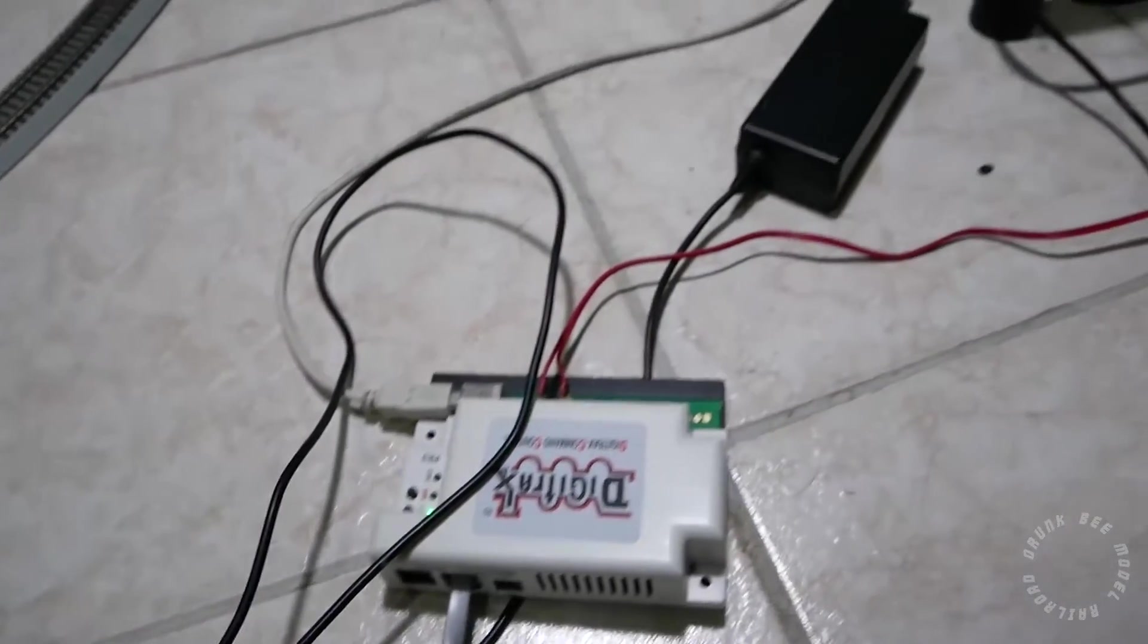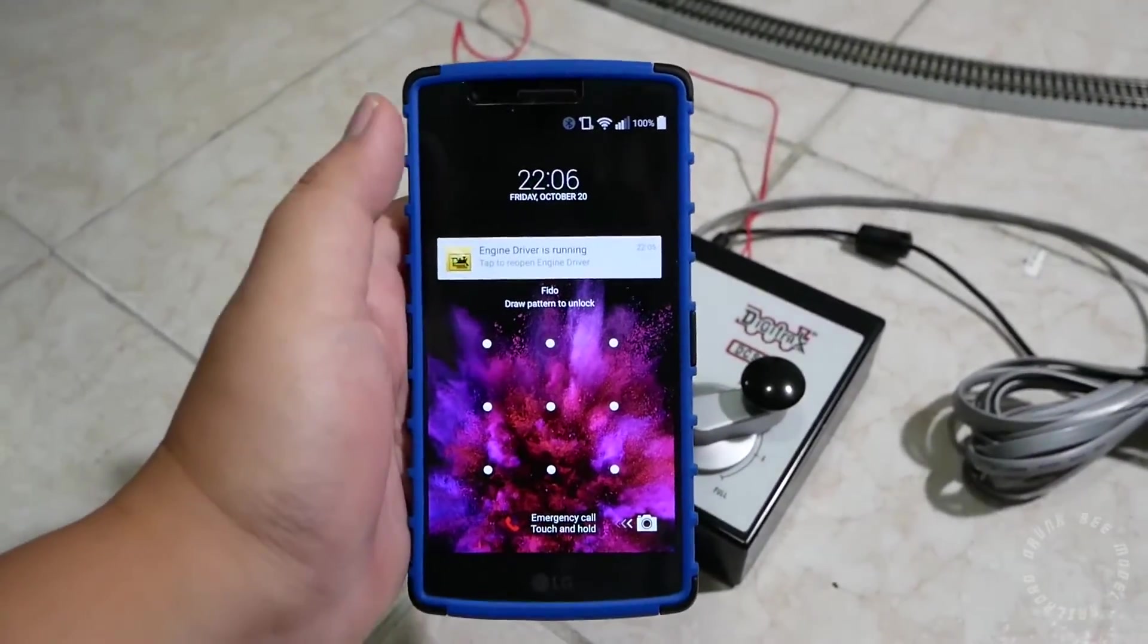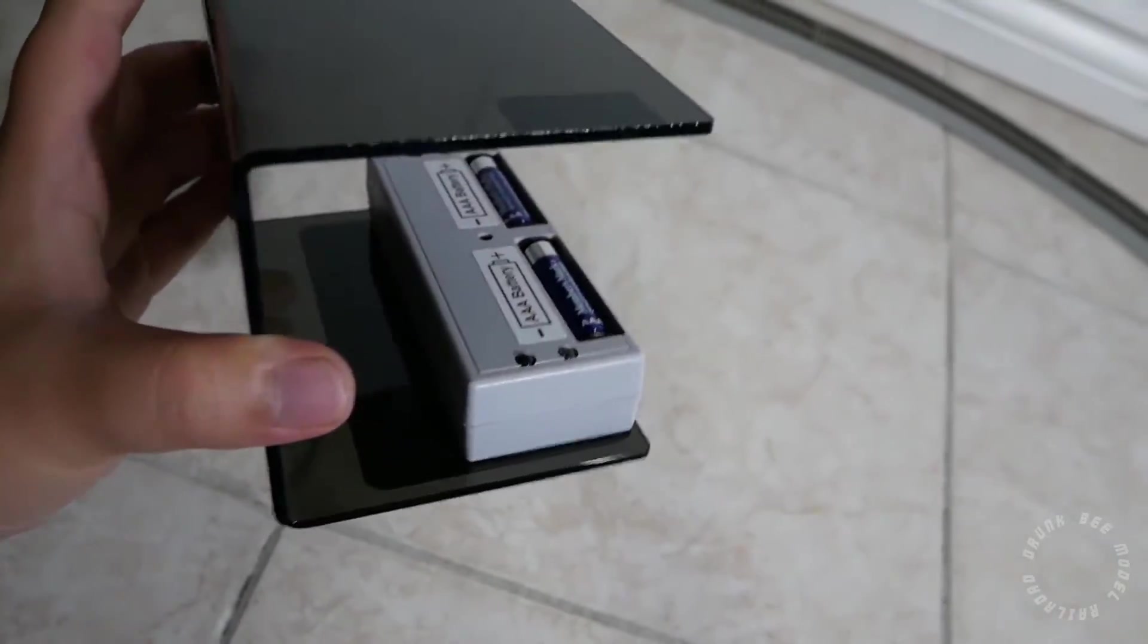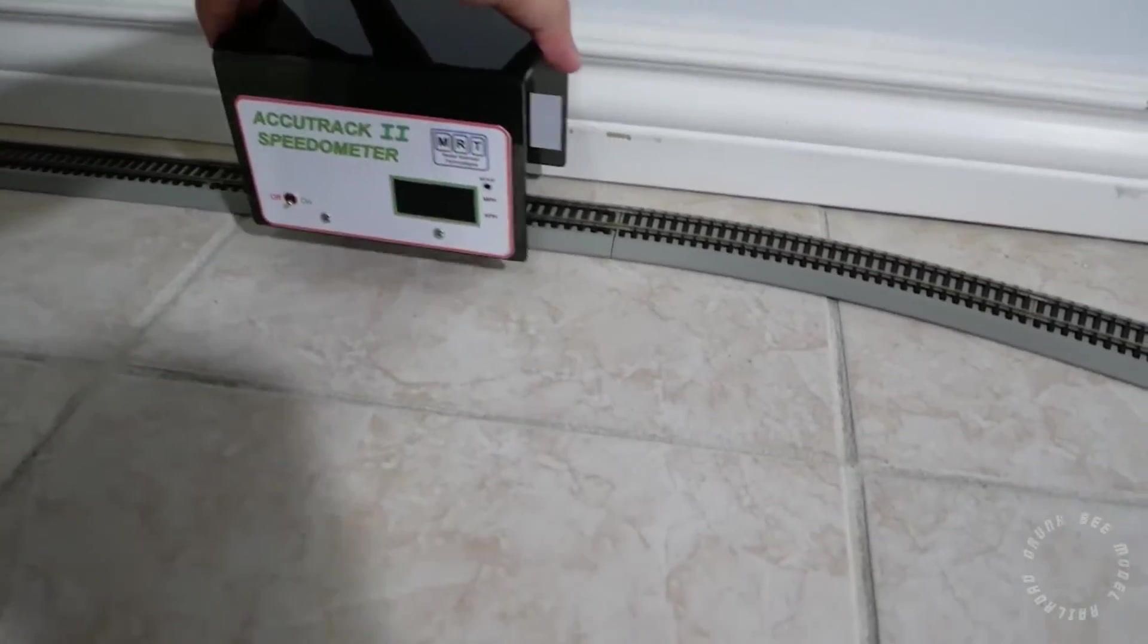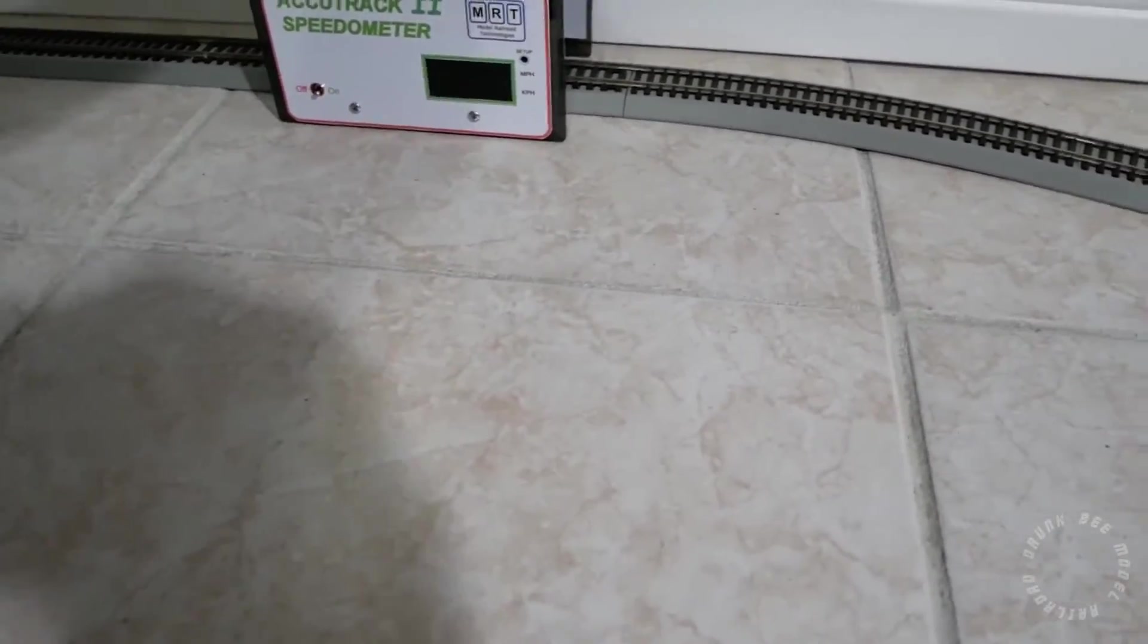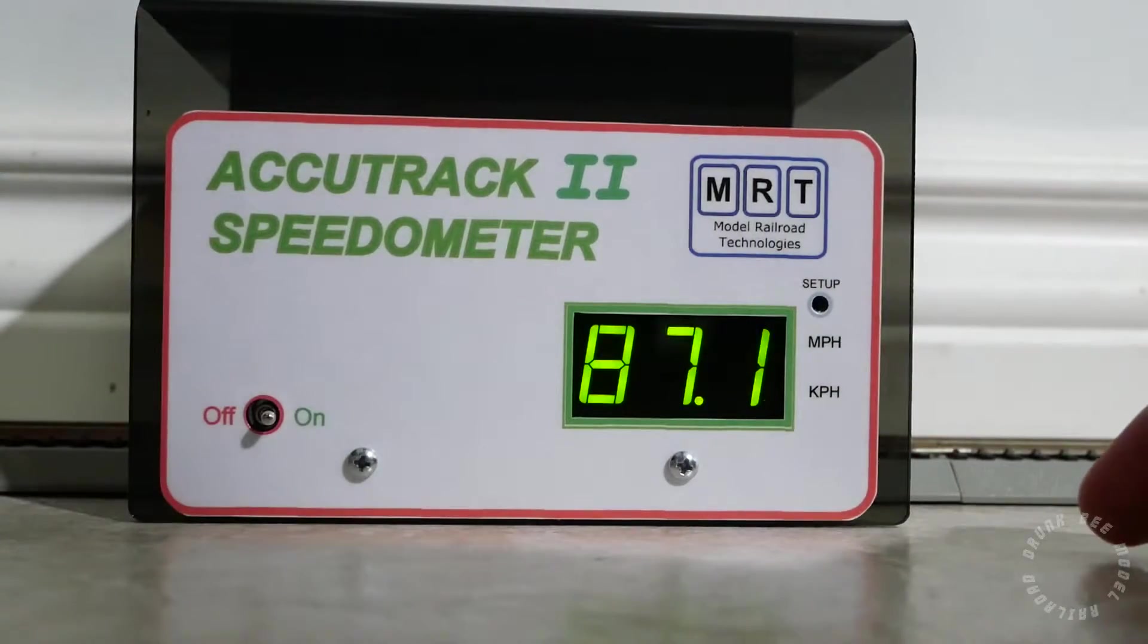You will also need a way to measure the locomotive speed. You can time how long it takes for the locomotive to pass a section of track and then manually calculate its speed, or you can buy one of these AccuTrack II speedometers. This thing is battery powered and it uses two infrared lights to calculate how fast a locomotive is going in terms of scale speed. It works for both O scale and N scale with units defined in miles or kilometers per hour.